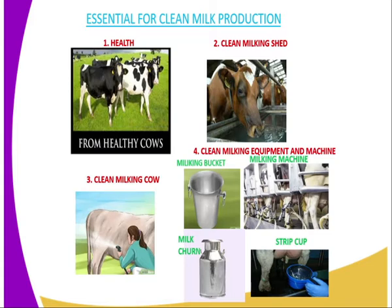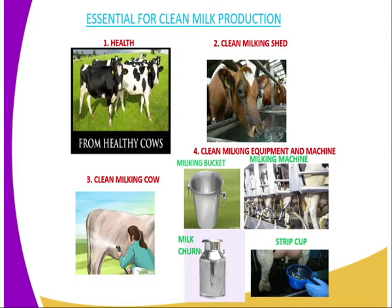Number three, we have the clean milking cow. The cow which is being milked — you are supposed to make sure that it is clean; you wash it. If the udder is dirty, you should make sure that you wash it properly so that the milk produced ends up being clean. Then we have clean milking equipment and machines, which include the milking bucket, the milking can or churn, the strip cup, and the milking machine. You are supposed to make sure that they are very clean, and especially the milking bucket, milking churn, and milking machine — they are supposed to be well sterilized.